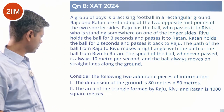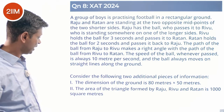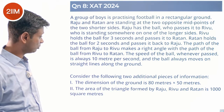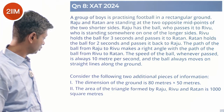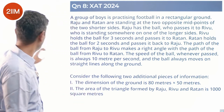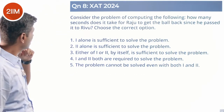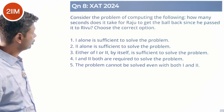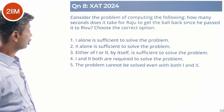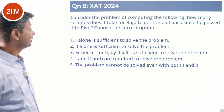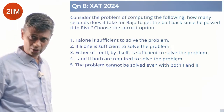Consider two additional pieces of information. The dimension of the ground is 80 by 50, and the area of the triangle formed by Raju, Rivu, and Ratan is 1000 square meters. The question to compute: how many seconds does it take for Raju to get the ball back since he passed it to Rivu?